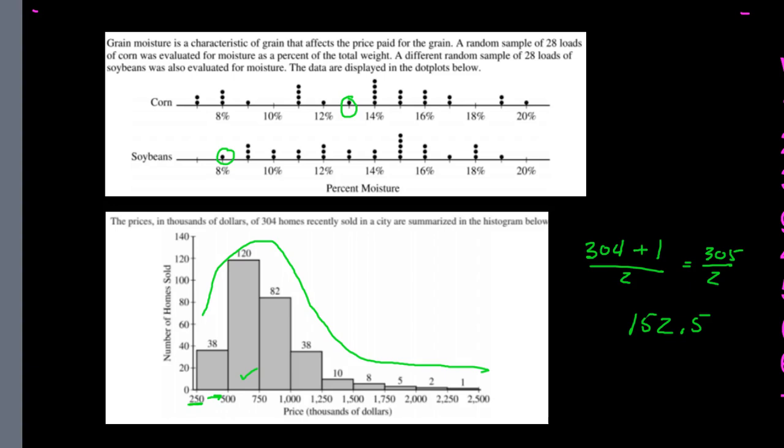We have 38 houses in the first bin and 120 in the second bin. 38 + 120 = 158, which means the 152nd and 153rd values both fall somewhere in that second bin. So the median must be in the $500,000–$750,000 bin. The drawback to histograms is we don't know the actual individual prices — every house in that bin could be $600,000, or they could be spread out anywhere in the range.